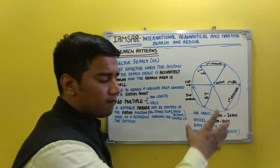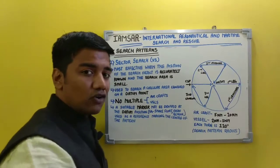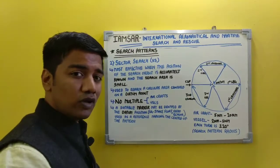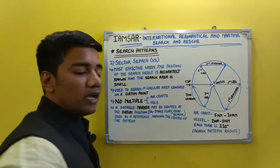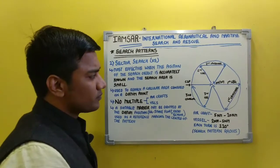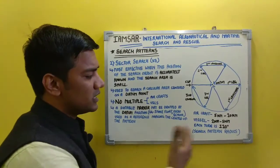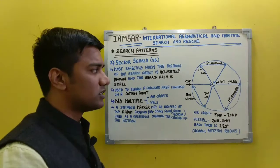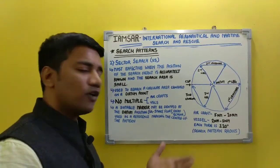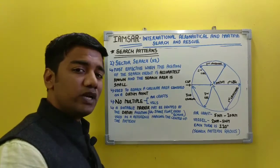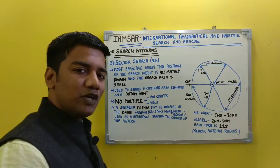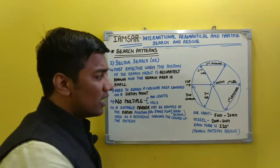The datum is present at the center of the circular search area. To mark it as a reference point, you may drop a smoke float or a radio beacon in order to mark the center of the circular area. Remember that the search pattern radius may differ for aircraft and vessels. The search pattern radius for aircraft may lie between 5 to 20 nautical miles, and for vessels between 2 to 5 nautical miles.